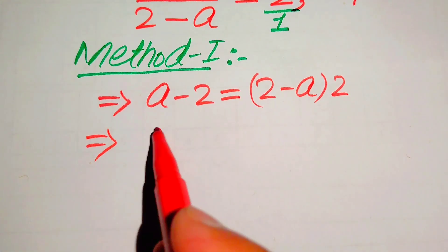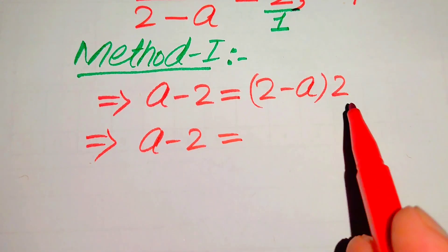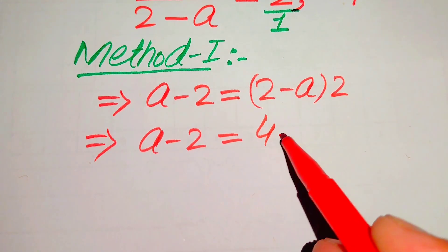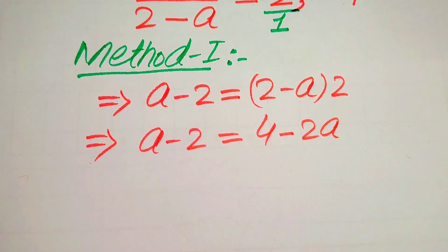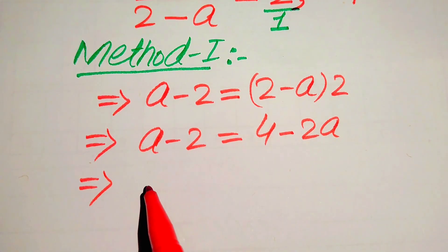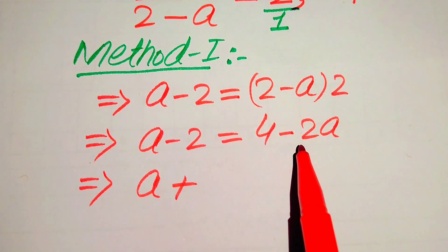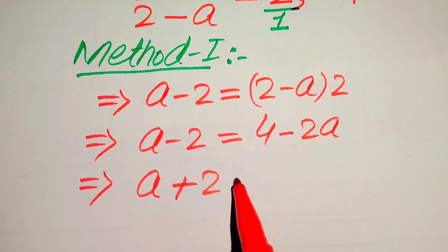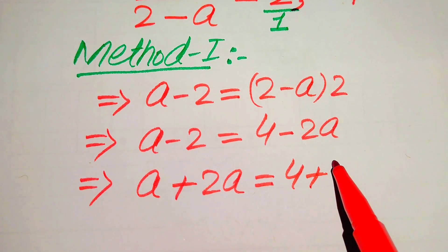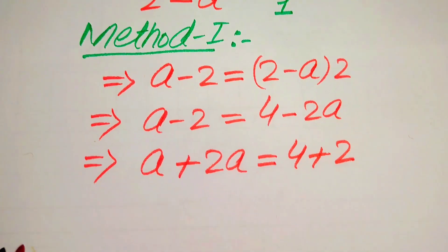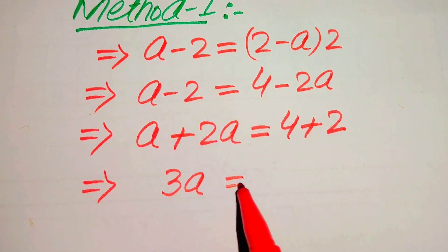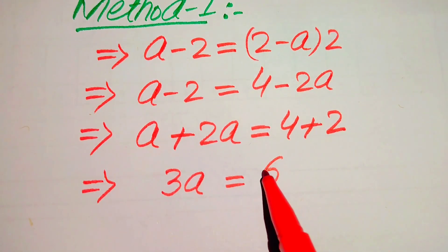Further, in the next step we have a minus 2 equals to 2 times (2 minus a). We distribute the 2: 2 times 2 becomes 4, minus 2 times a. Now we move minus 2a to the left hand side, it becomes plus 2a, and we move minus 2 to the right hand side, it becomes plus 2.